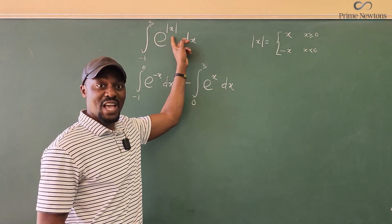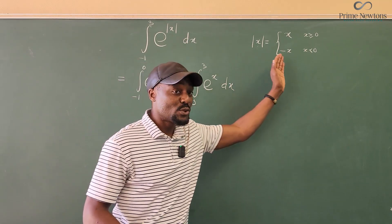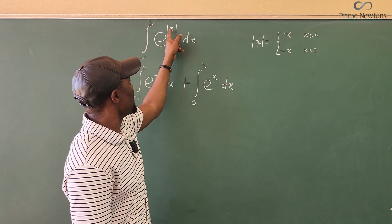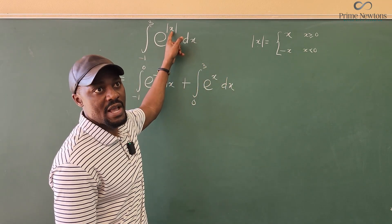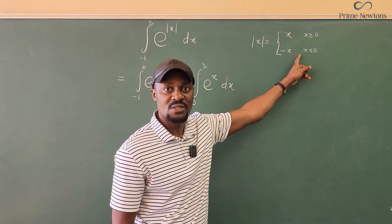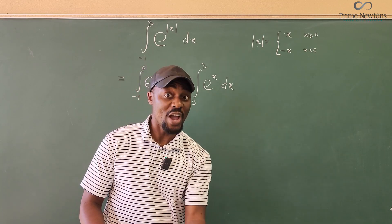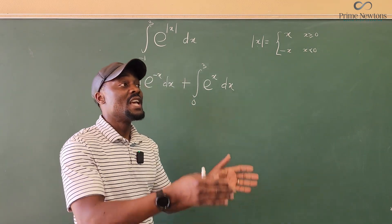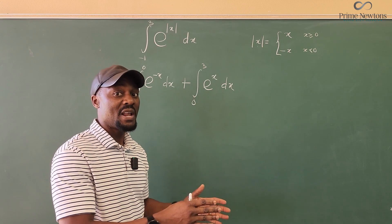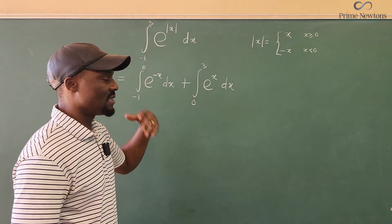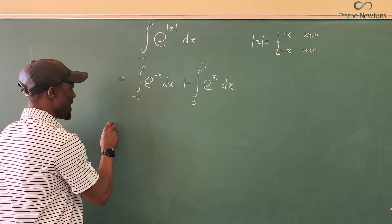So whenever you see the absolute value sign in any integral, make sure you break it down to when the function, whatever that function is. If this is X squared, well, X squared is always positive, so you wouldn't need to do this. But if it's X squared minus one, then you have to do it. You have to find when X squared minus one is positive and when X squared minus one is negative. You have to solve inequalities and all that. But this is a lot easier, so let's just get to the answer of this.